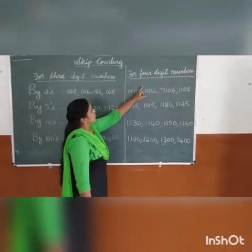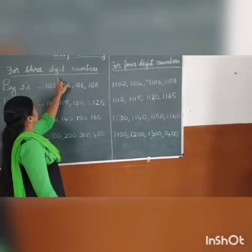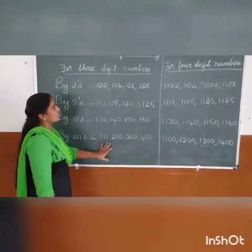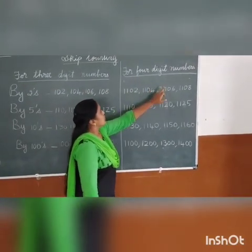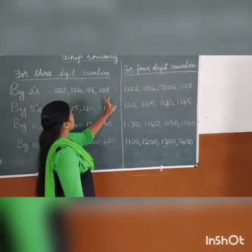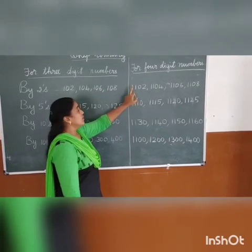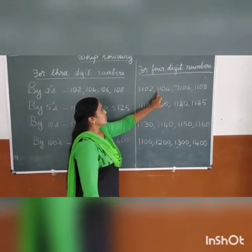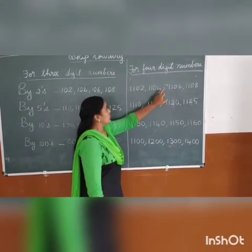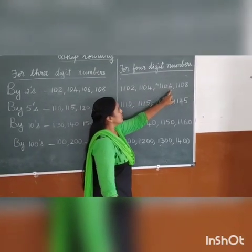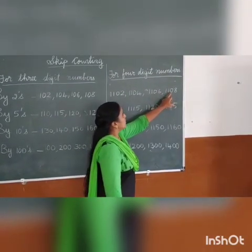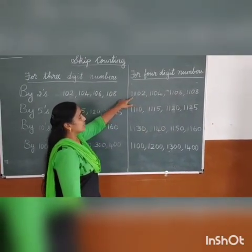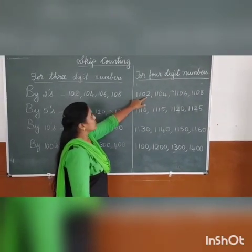Next one, for 4-digit numbers. We were doing 3-digit numbers; now for 4-digit numbers. By 2s: 1,102 — 1,104 — 1,106 — 1,108.